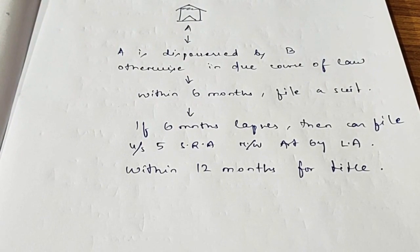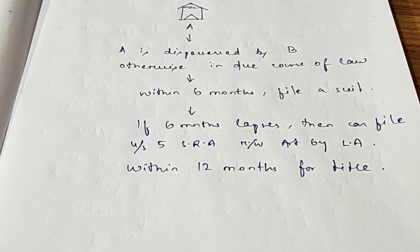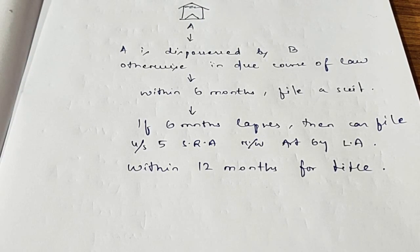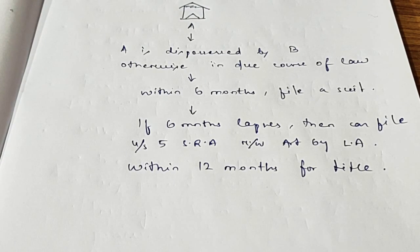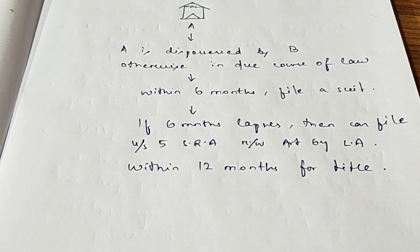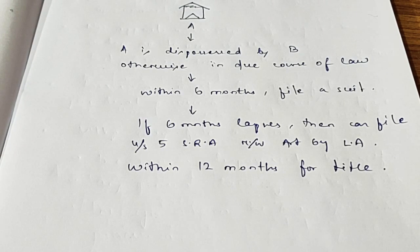For example, suppose A is in possession of a house and is dispossessed by B otherwise than in due course of law — say, by use of force. Then A may, within 6 months from the date of dispossession, file a suit for recovery of possession under Section 6. If the 6-month period lapses, A can still file under Section 5 of the Specific Relief Act read with Article 64 of the Limitation Act, for recovery of possession on the basis of title as mentioned in Section 6, Clause 4, with a limitation period of 12 years from the date of dispossession.